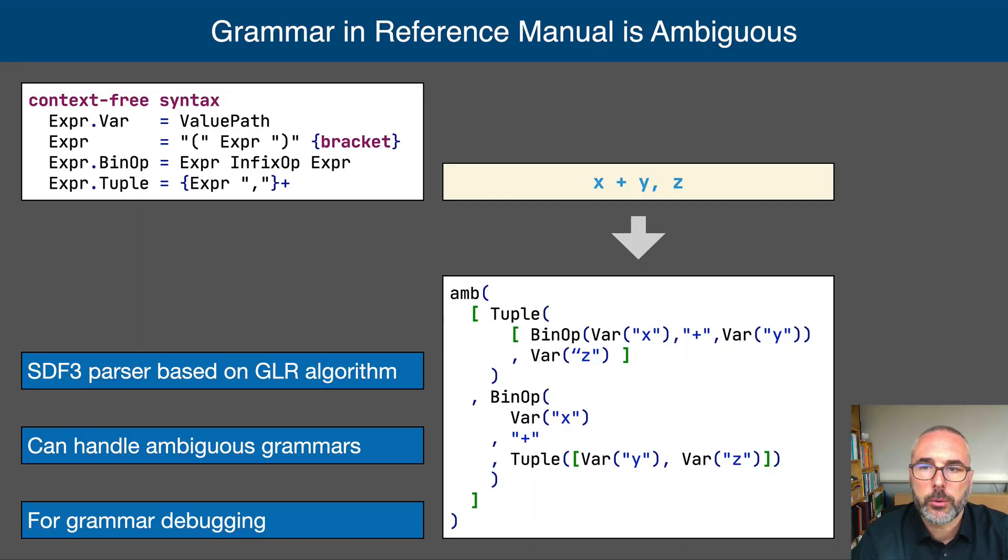The OCaml reference grammar is ambiguous on purpose, choosing for a concise grammar with separate disambiguation rules. SDF3 uses the scannerless generalized LR parsing algorithm, which can deal with the full class of context-free grammars, including ambiguous ones. The parser returns a parse forest, representing all possible ambiguities.